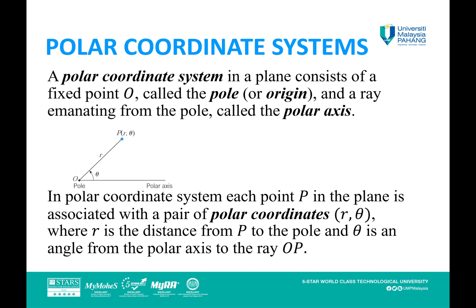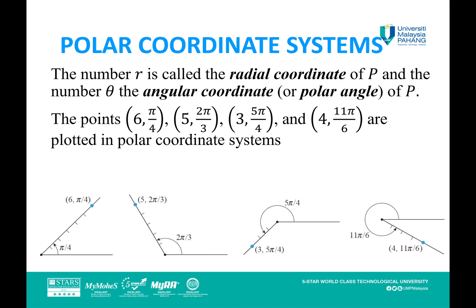The number r is called the radial coordinate of P, and the number θ is the angular coordinate or polar angle of P.